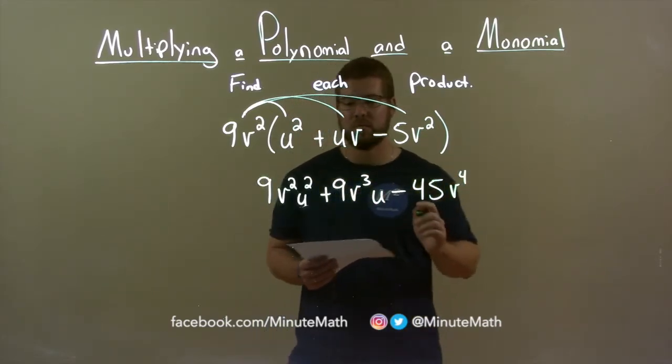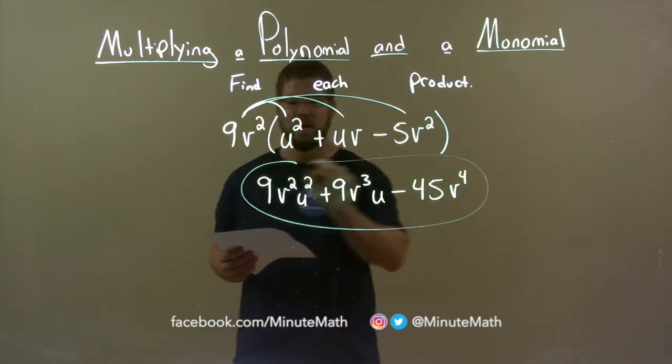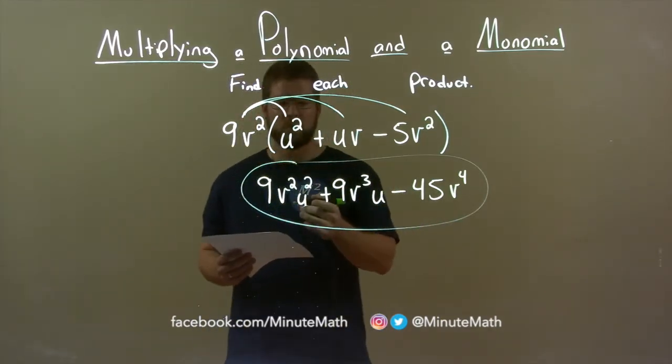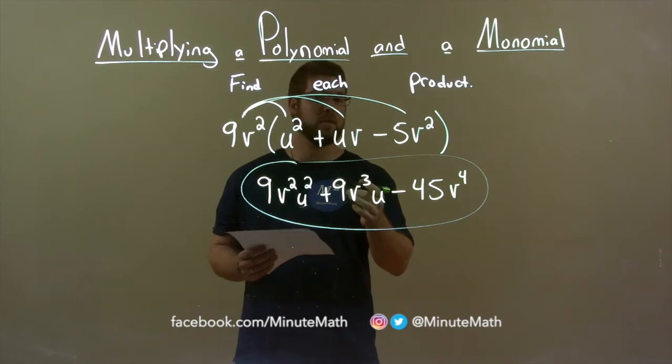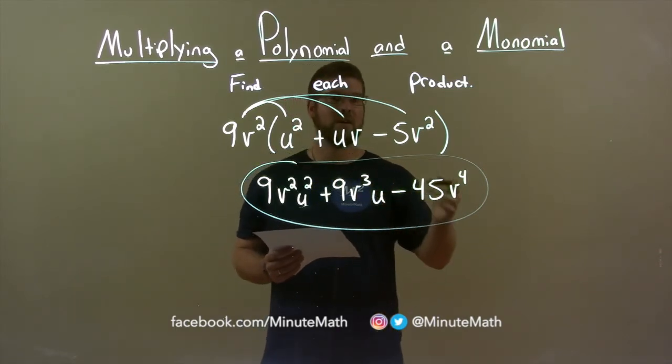Remember, we add the exponents. So, our final answer here is 9v squared u squared plus 9v to the third power times u minus 45v to the fourth power.